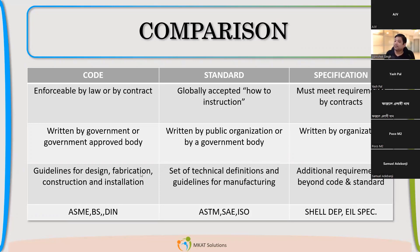Specifications are written by the organization. A code, like a design code — let us say Section 8, Division 1 — covers everything starting from the procurement of material, how to procure material, what type you should have, what are the additional requirements for that material, to the end supply, including design, fabrication, welding — each and every stage — how you will be performing, what are the requirements. It will cover all.